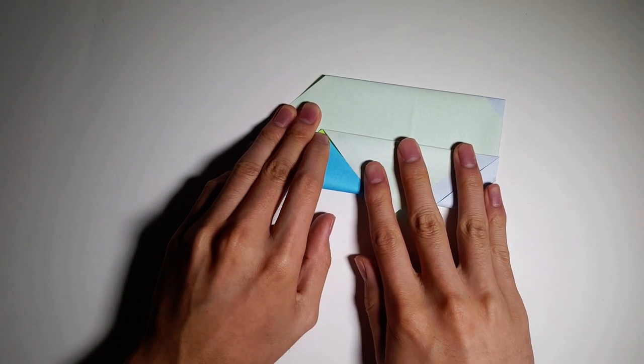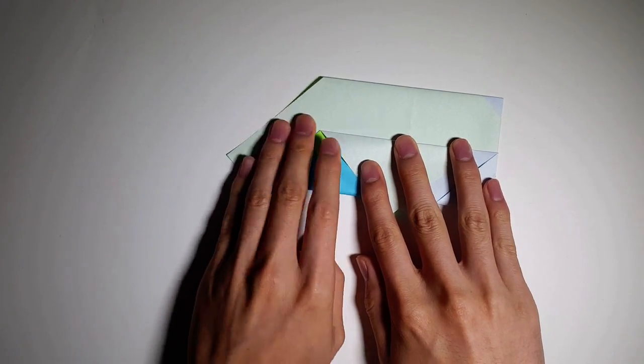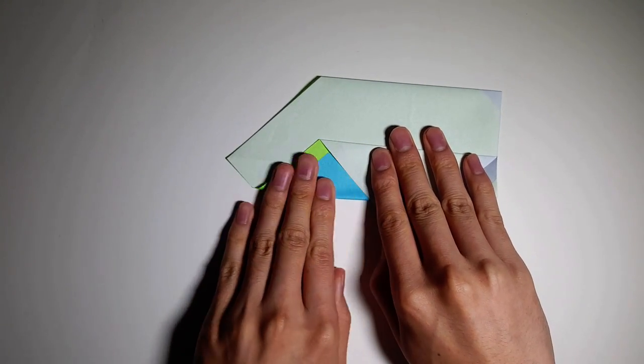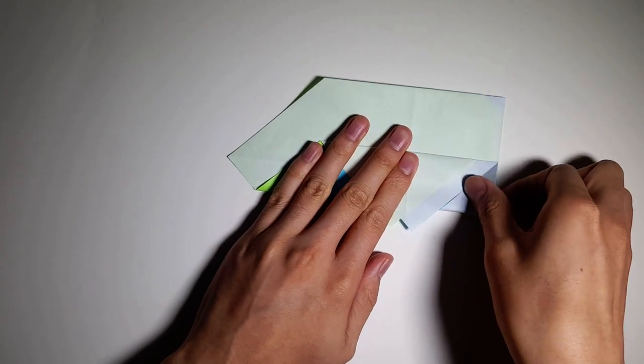And then with this fold, just estimate how big you want it. So just grab it together, and once you're happy with it, just crease it down.